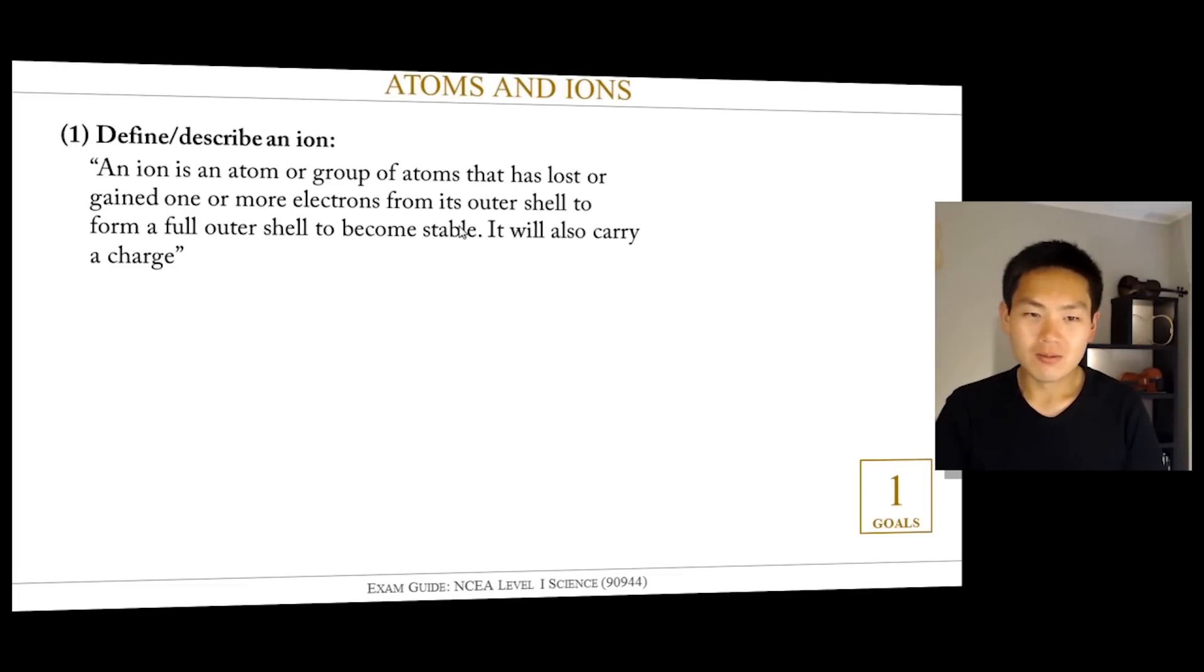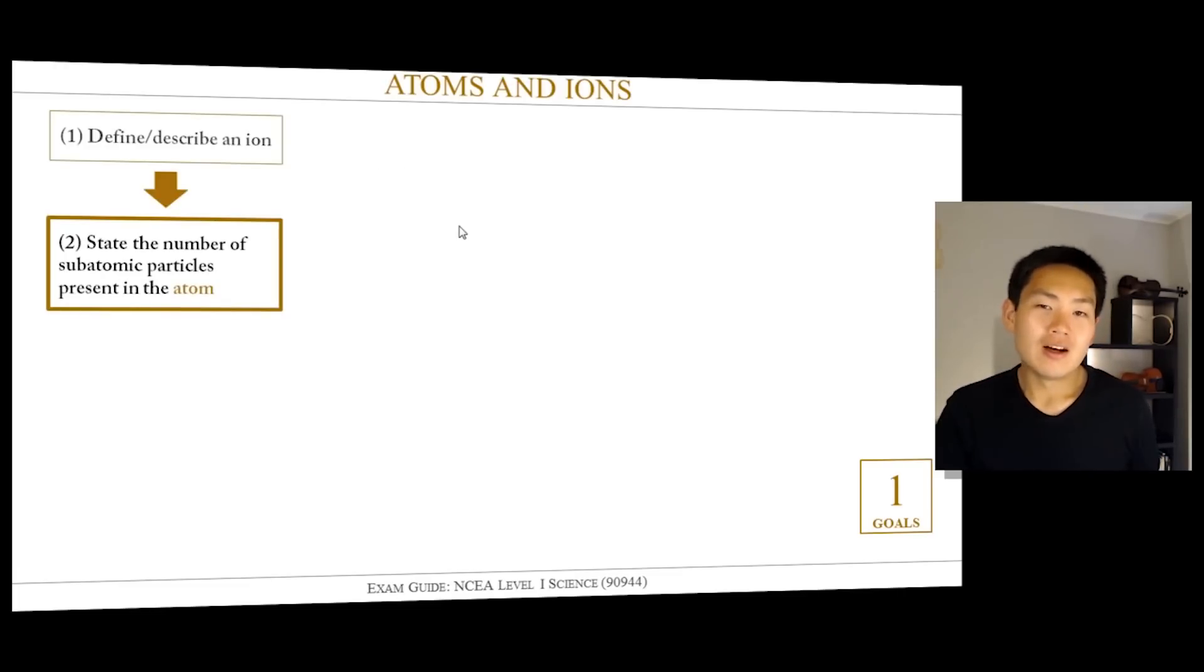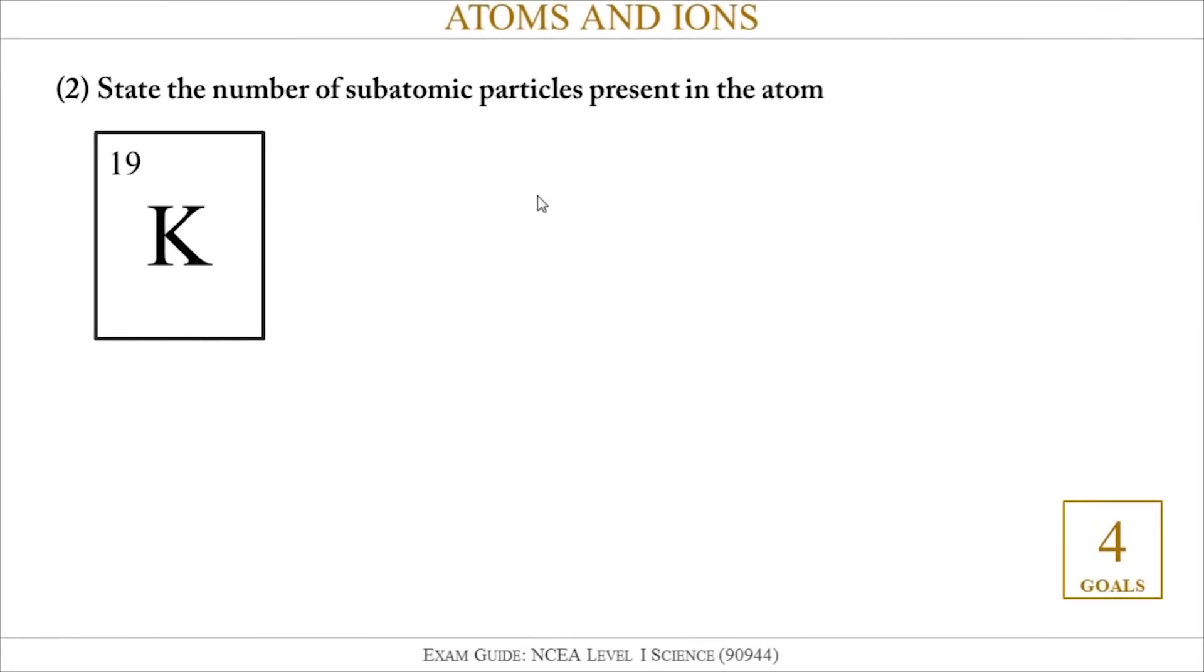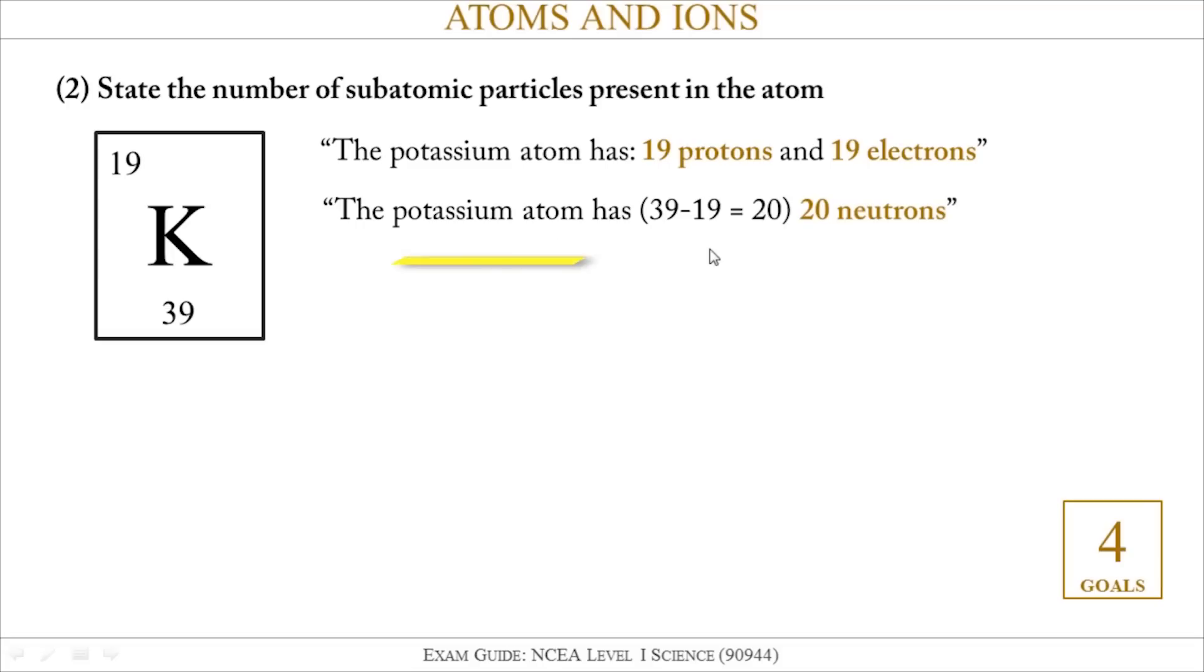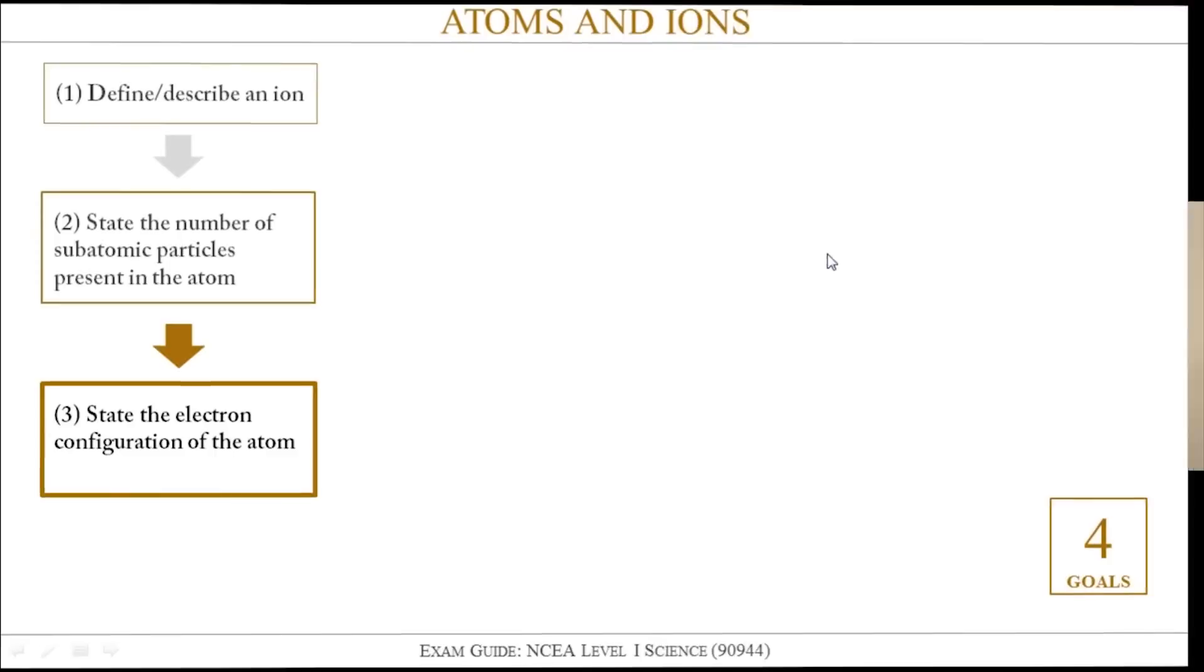The second thing I would personally do when answering this question is to state the number of subatomic particles present in the atom. One of the examples the question wanted you to talk about was potassium. You look at the periodic table and see that potassium, symbol K, has an atomic number of 19. You would write down: the potassium atom has 19 protons. I know it's 19 protons because the atomic number tells me the number of protons present. It also tells me how many electrons are present in the atom. If you are given a mass number, in this case I've given it to you as 39, then you can also work out how many neutrons there are. You would write: the potassium atom has 39 minus 19 equals 20 neutrons.